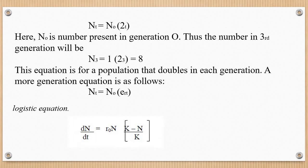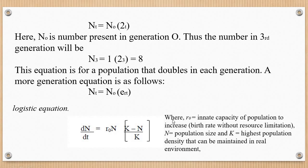Now the logistic equation: dN/dt = r₀N × (K − N)/K. Here r₀ is the innate capacity of the population to increase — the inborn capacity to increase without resource limitation, i.e., the natural reproductive capacity. N is population size, and K is the highest population density that can be maintained in a real environment. This formula is used for calculating logistic growth.